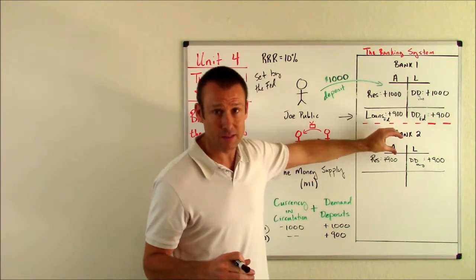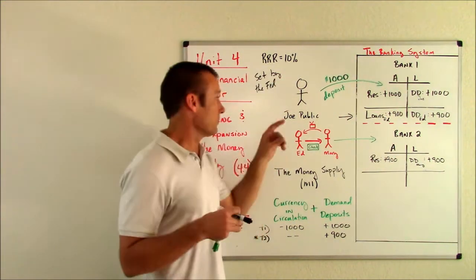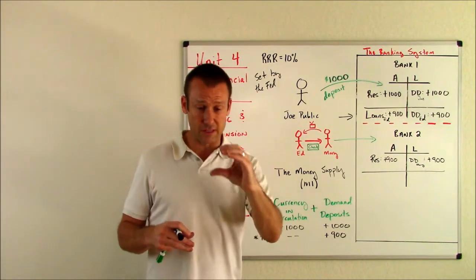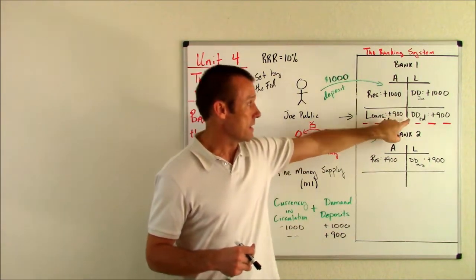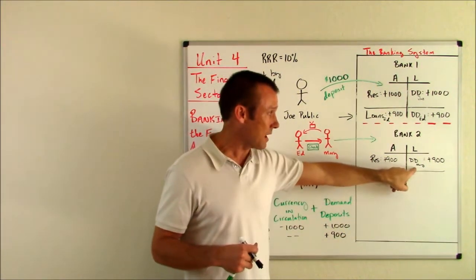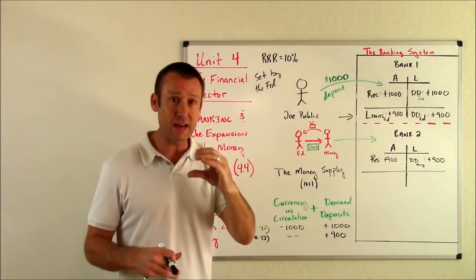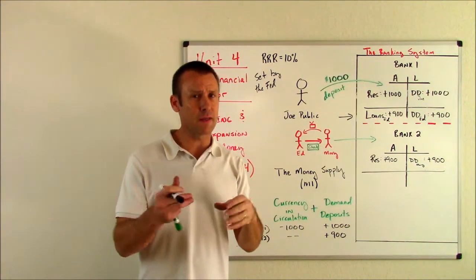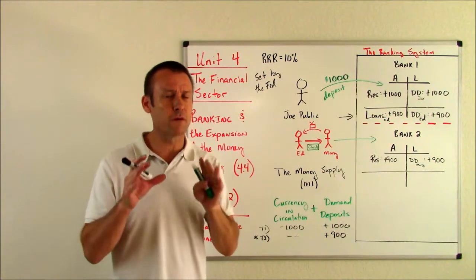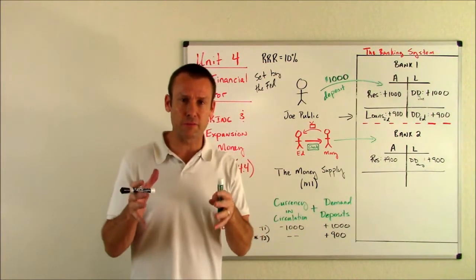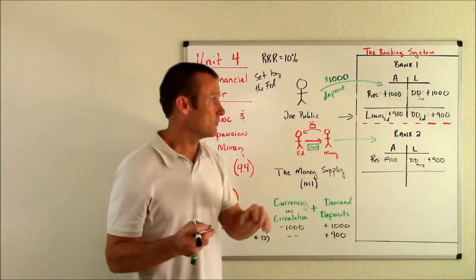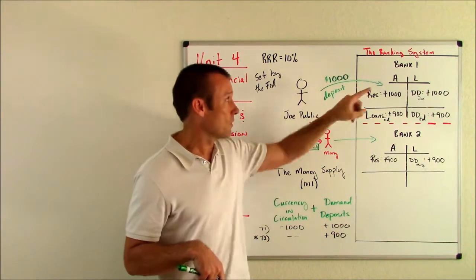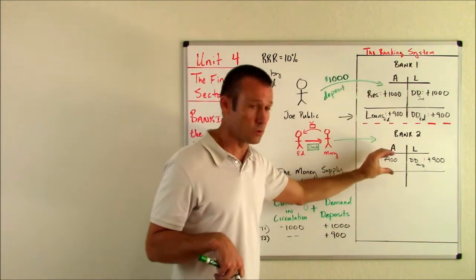That check goes into bank two, but it still needs to be cleared. That check that got deposited in bank two is now going to be sent to the Fed. They're not just a regulatory authority, they also clear checks. The Fed is going to get this check and say, a depositor, Ed, from bank one wrote a check to a depositor at bank two. The Fed is going to say, I need to move reserves from bank one over to bank two. Banks keep the majority of their reserves at the Fed. When this check comes to the Fed, the Fed is saying, I need to deduct reserves at bank one by 900 and move those over to bank two.